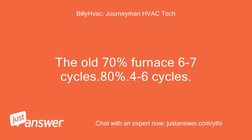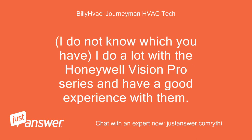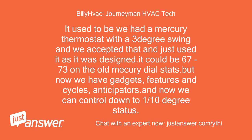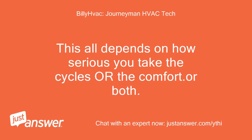An old 70% furnace runs 6 to 7 cycles; an 80% furnace runs 4 to 6 cycles. I do a lot with the Honeywell Vision Pro series and have had good experience with them. It used to be that we had a mercury thermostat with a 3 degree swing and we accepted that — it could be 67 to 73 on the old mercury dial stats. But now we have gadgets, features, cycles, and anticipators, and we can control down to one tenth of a degree. This all depends on how seriously you take the cycles or the comfort, or both.